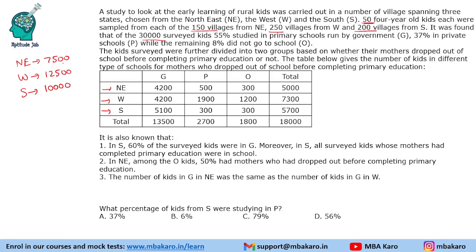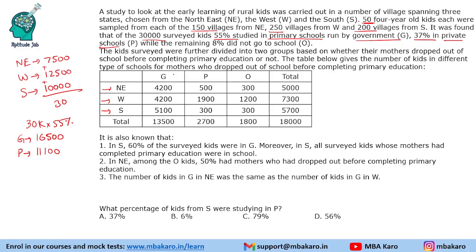It was found that 30,000 kids were surveyed in total. 55% studied in primary schools run by government, denoted by G. So 30,000 × 55% = 16,500 will be in G. 37% — so 11,100 — in P, that is private schools, and the remaining 8% did not go to school, denoted by O, so 2,400. These are the totals: 16,500 in government, 11,100 in private schools, and 2,400 not going to school.